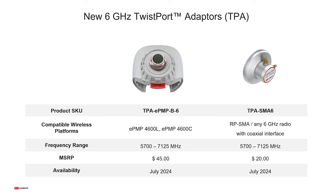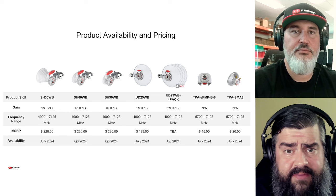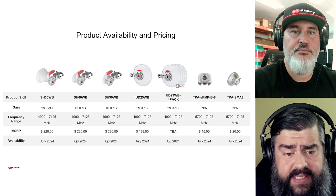We have two new twist port adapters: the ePMP B6 for the 4600L and 4600C radios, and the TPA SMA6 with two SMA connectors for all other radios. Both have a frequency range of 5.7 to 7.125 GHz and work with all of our new wideband antennas.